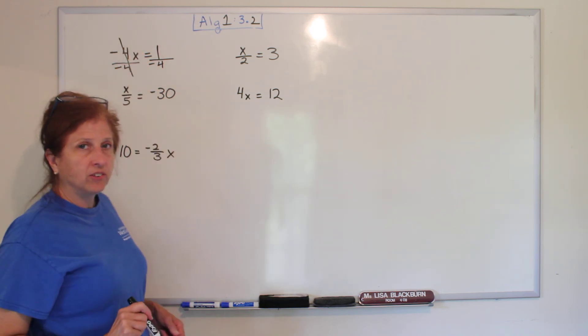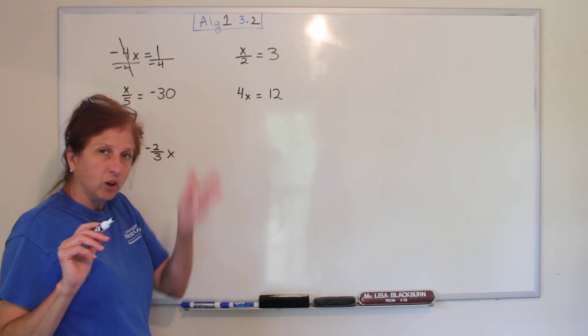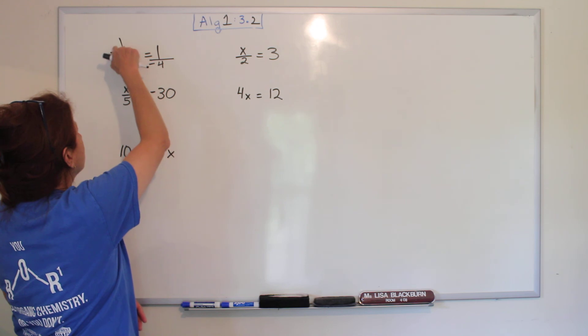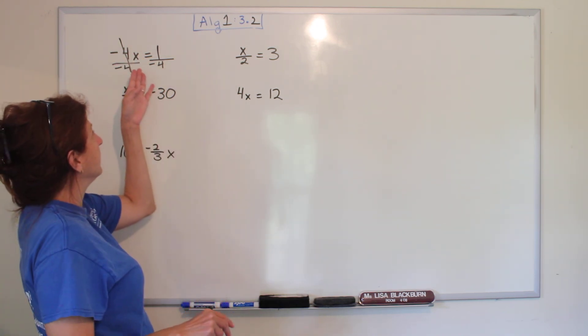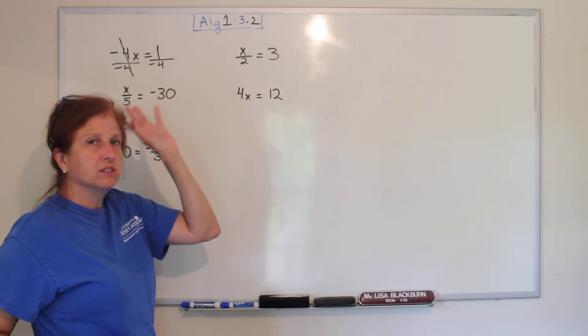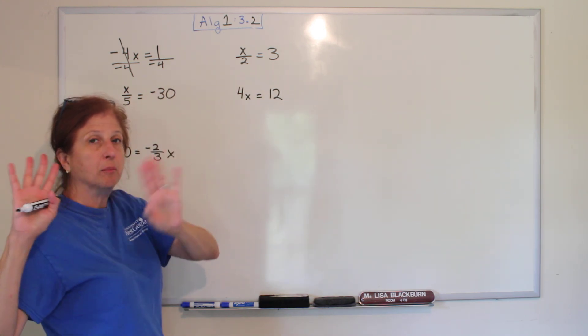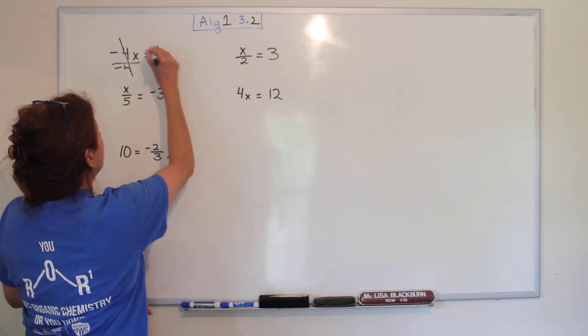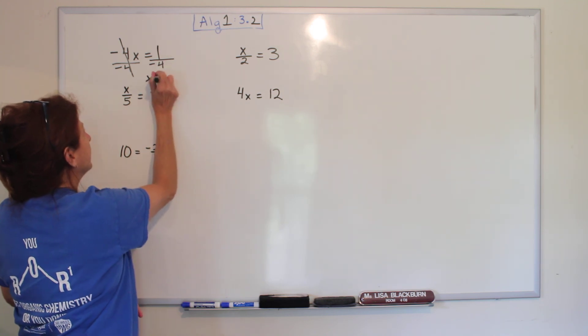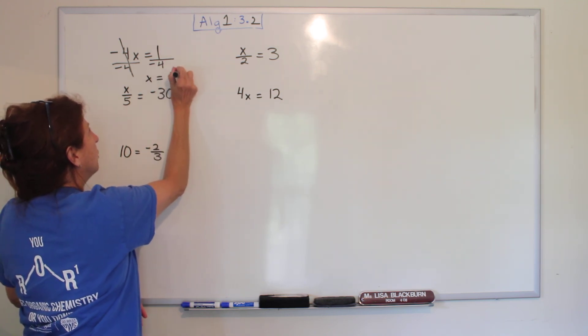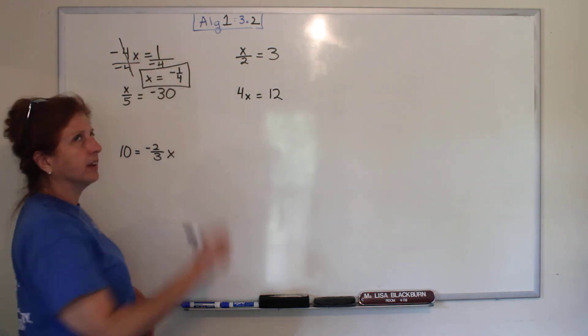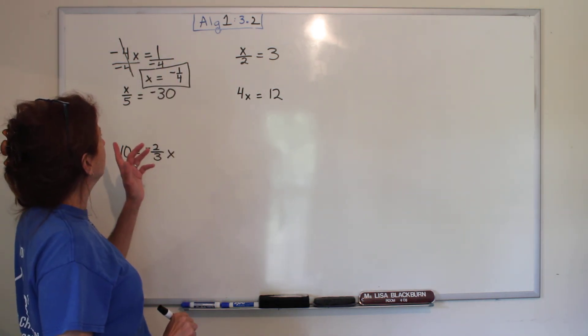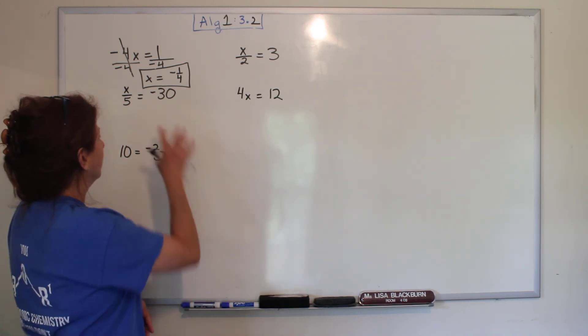We cross those out. We don't want them to go away. So we cross them out because negative four divided by negative four is one. And then we don't want to write that one there because it'll just confuse things. It's going to become an understood one. So this looks weird, but it's x equals negative one fourth. And it doesn't really matter that the negative was written on the bottom or the top or out front. You can write it wherever.